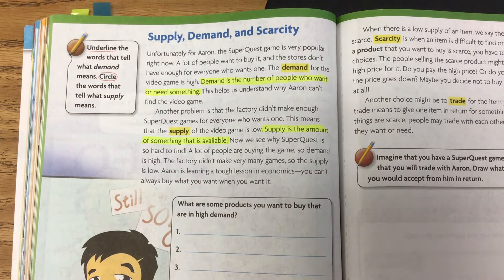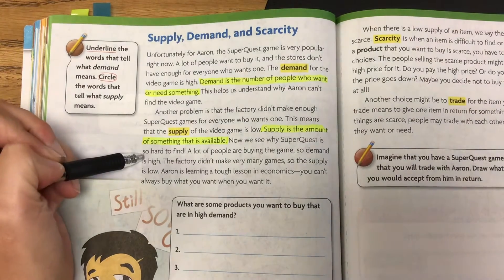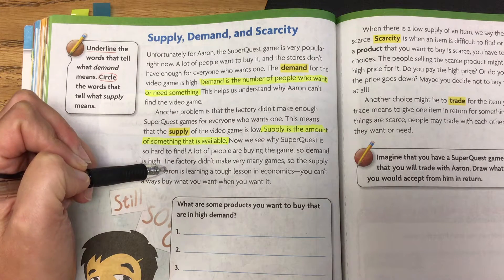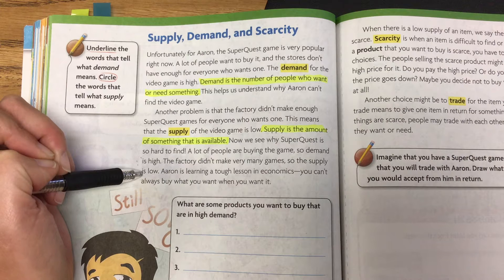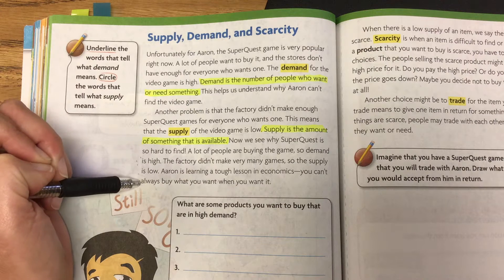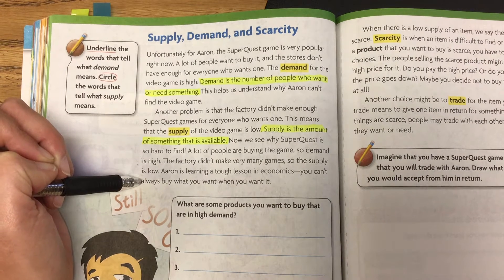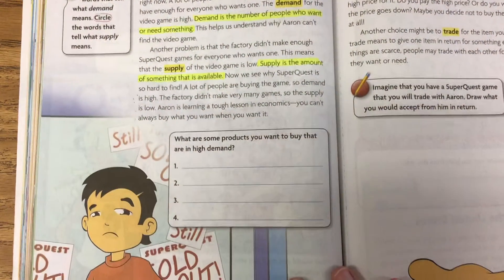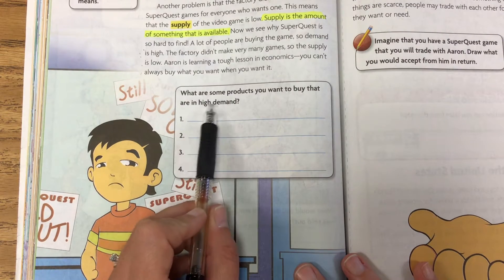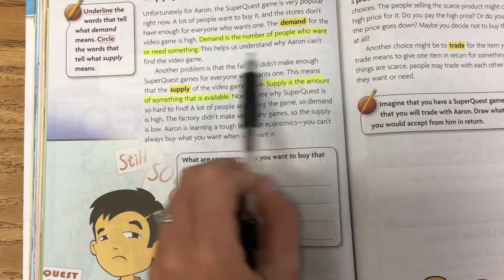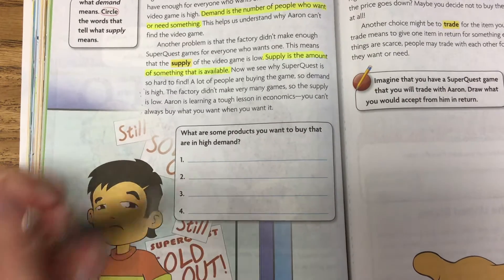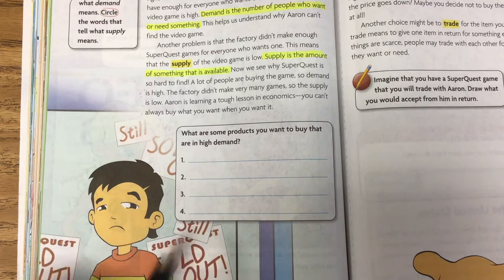Now we see why SuperQuest is so hard to find. A lot of people are buying the game, so demand is high. The factory didn't make very many games, so the supply is low. Aaron is learning a tough lesson in economics — you can't always buy what you want when you want it. This text box says, what are some products you want to buy that are in high demand? Remember what demand means — a lot of people want it. Think about some things that you want that are in high demand and go ahead and list those here.